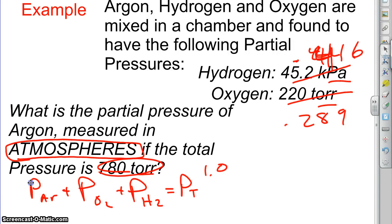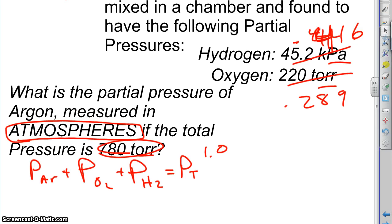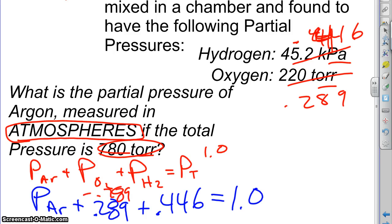So now we go through and we plug these things in. We have these numbers. Now we're going to plug them in. Partial pressure of argon, we don't know - that's what we're trying to find. Partial pressure of oxygen is the 0.289 atmospheres. Partial pressure of the hydrogen is the 0.446 atmospheres. And that's going to equal the total, which is 1.0. And so now I've got to solve for the argon. The way I'm going to do that is by subtracting the 0.289 from both sides, the 0.446 from both sides.